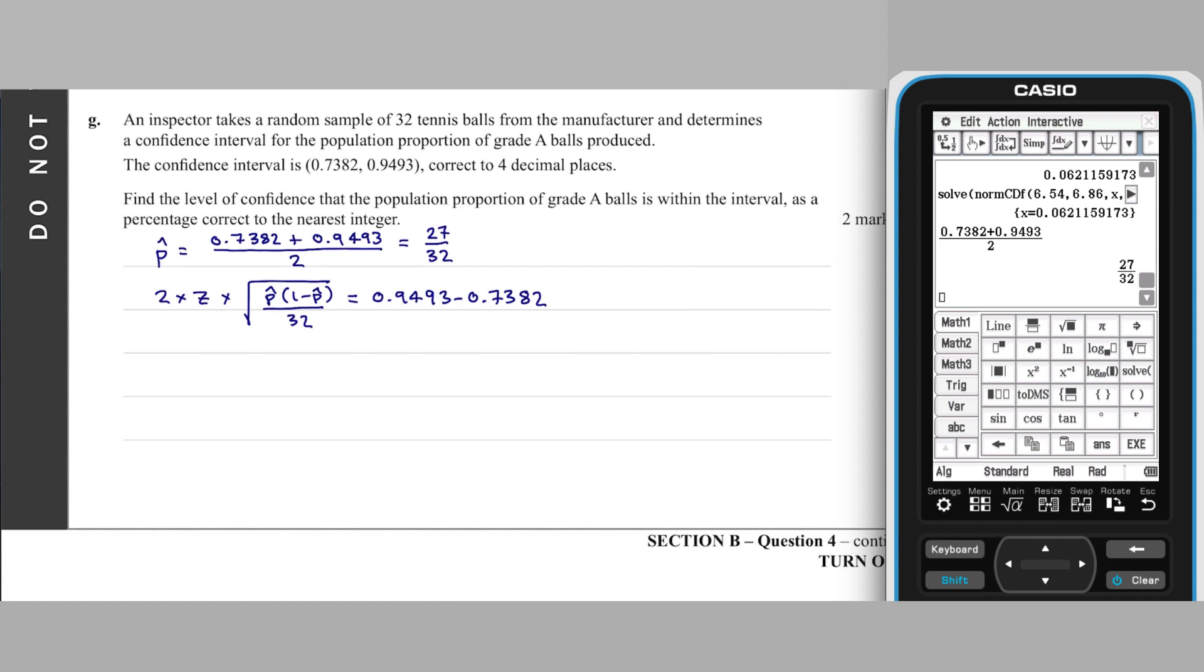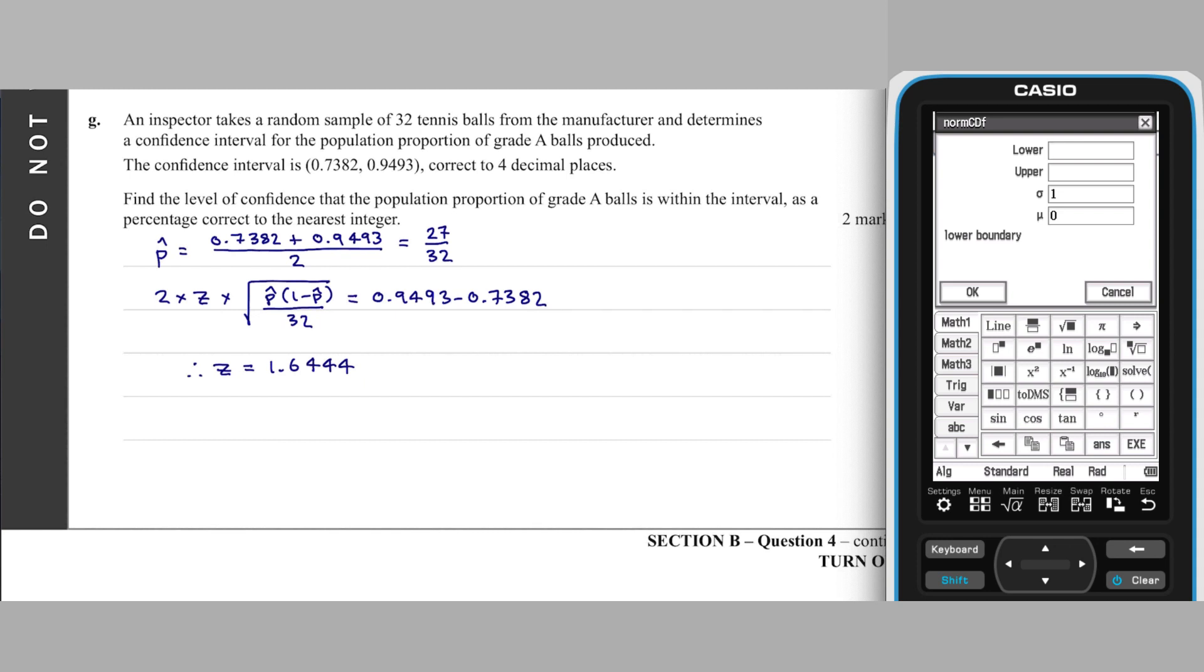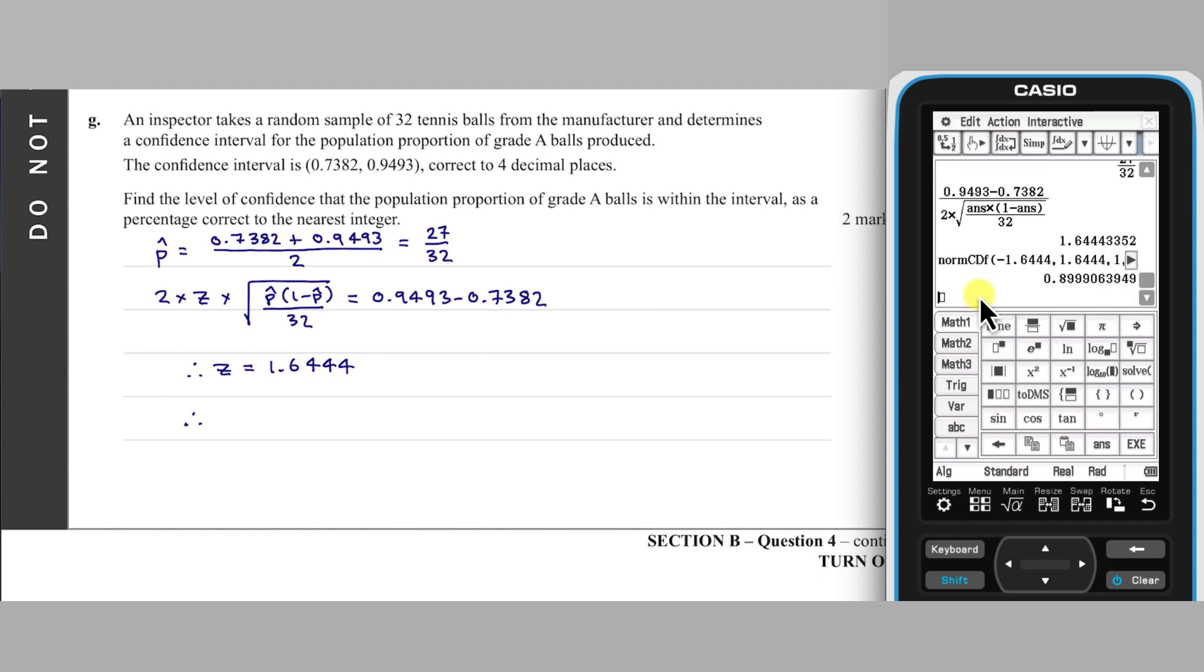This equation can be solved by transposing or by a solve command. I'm going to solve it by transposition. With this Z-score of Z equals 1.6444, the confidence level can be found using norm CDF, as the confidence level is the proportion of the Z-distribution that lies within plus or minus 1.6444 of its mean of 0. This answer, as a percentage to the nearest integer, is 90%.